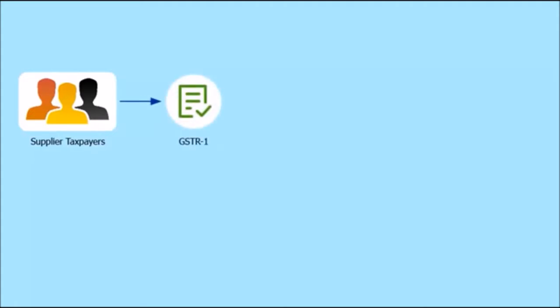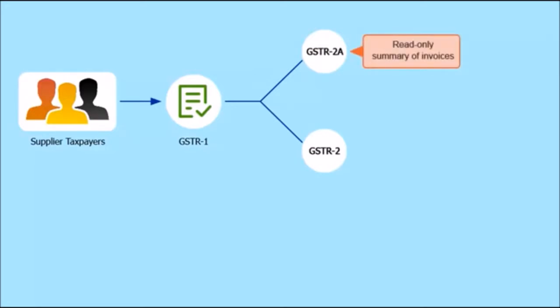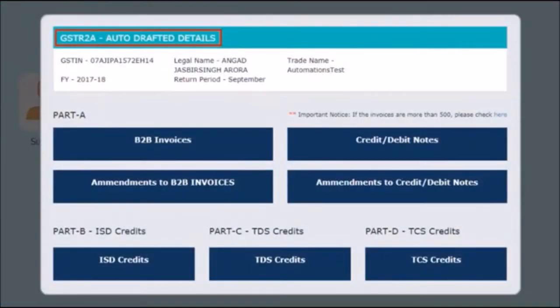Once the supplier taxpayer uploads invoice data in GSTR1, the GST portal auto-populates the details in GSTR2A and GSTR2 of the respective recipients based on their GSTIN. GSTR2A is a read-only summary of invoices based on the data received from the suppliers. The invoices saved as well as submitted by the suppliers will be visible in GSTR2A and will be indicated by their status.